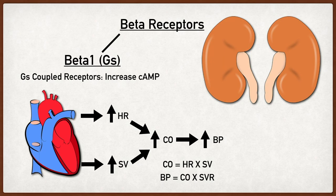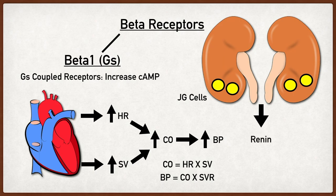There's another way we increase blood pressure using beta 1 adrenergic receptors, and that involves the kidneys. There are specific cells in the kidneys called the juxtaglomerular cells. These cells contain beta 1 adrenergic receptors, so increased sympathetic activity will lead to increased renin release from the juxtaglomerular cells. Renin is the first step in the renin-angiotensin-aldosterone system, and when that system is activated it will ultimately increase blood pressure. The takeaway point is that beta 1 receptors in the heart and kidneys work synergistically to increase blood pressure during the fight-or-flight response.